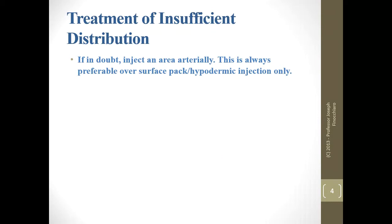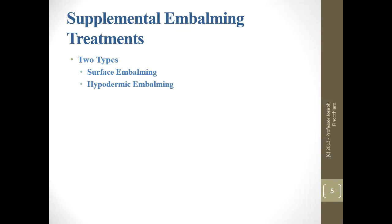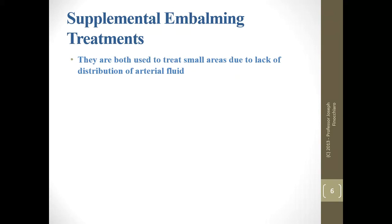What if you don't have an area of sufficient distribution? The first thing to do is try to inject that area arterially before attacking it with hypodermic needles or surface packs. Once you've tried to do that, then at that point you should turn to your supplemental treatments. Even if you're using the hypovalve trocar to attack the entire bottom of the leg, you have no idea how much of that is actually going to preserve, which is why we really want to try to get that done arterially first.